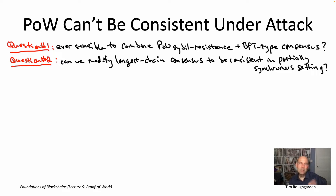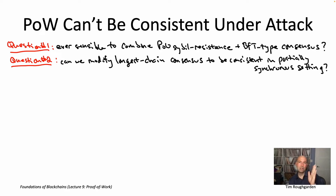Just a brief reminder about the partially synchronous setting — that was the sweet-spot model from lecture number six, where you do allow attacks like denial-of-service attacks or network outages of unbounded but finite duration. It's the model with the global stabilization time (GST). Before GST, all bets are off about message delivery. After GST, it behaves like the synchronous model, with all messages arriving within capital-delta time units for some known parameter capital delta.